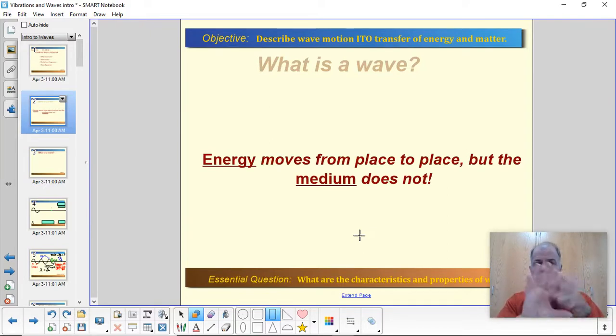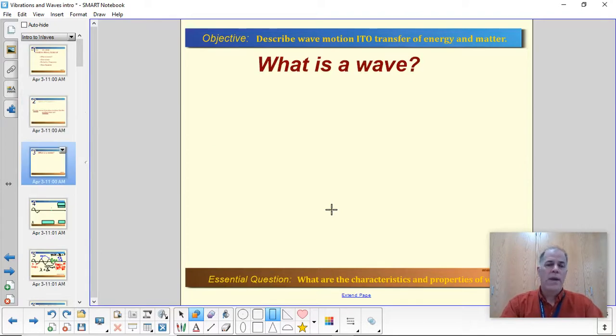A third example of this is if you see a piece of floating wood in the water. As waves travel through the water, the piece of wood moves up and down, but it doesn't surf along with the waves. Most things in the water just stay where they are as the waves pass underneath them. So the energy moves from place to place, but the medium does not.